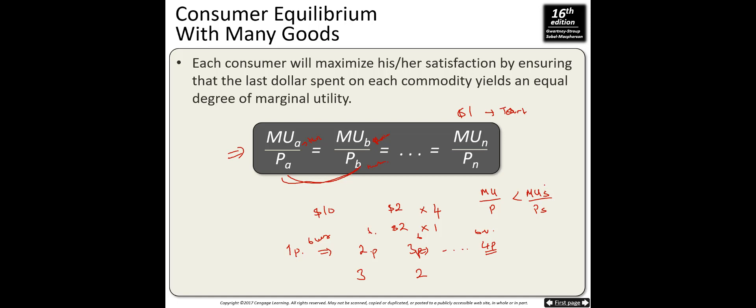The marginal utility per dollar spent on the fourth portion of wings is less than the marginal utility per dollar from soda. To improve, you buy more soda, which reduces soda's marginal utility, and buy less wings, which increases wings' marginal utility. At the end you reach equilibrium: marginal utility of wings divided by price of wings equals marginal utility of soda divided by price of soda. This is how you make decisions in consumer theory with bundles of goods.